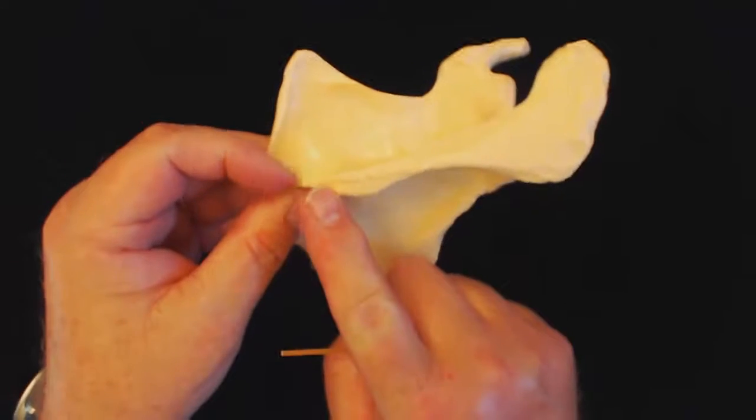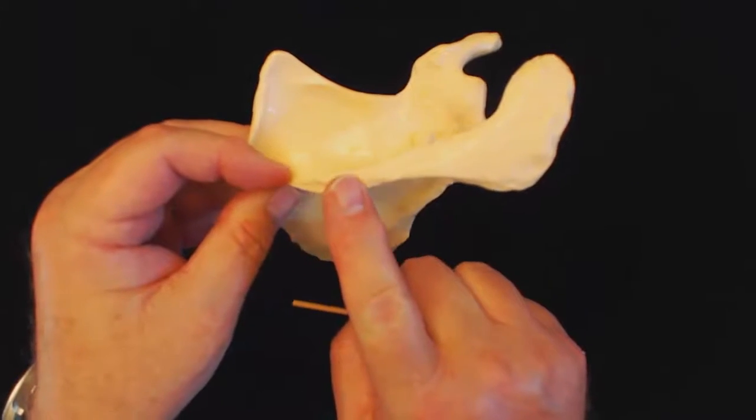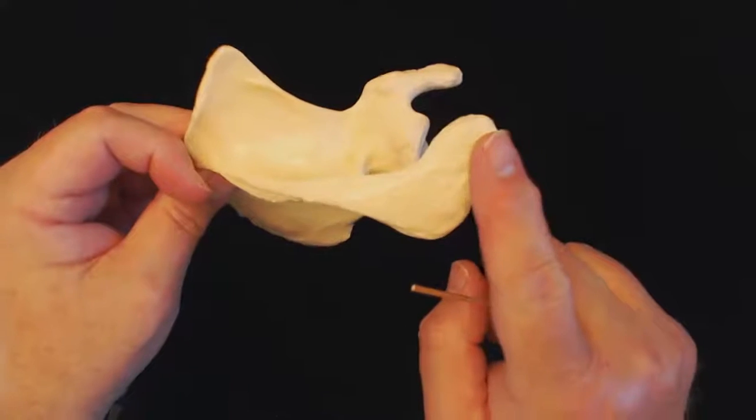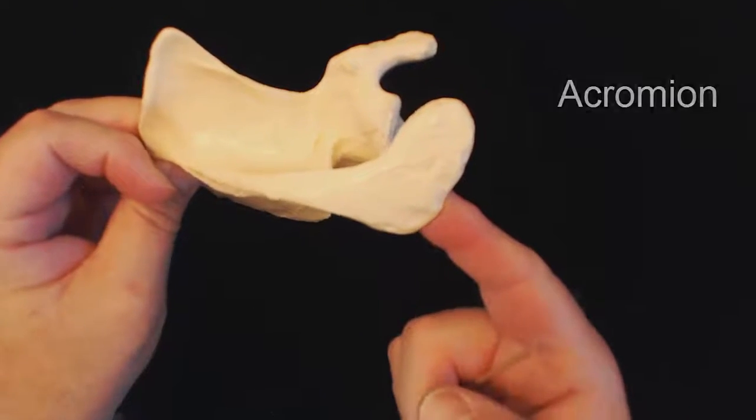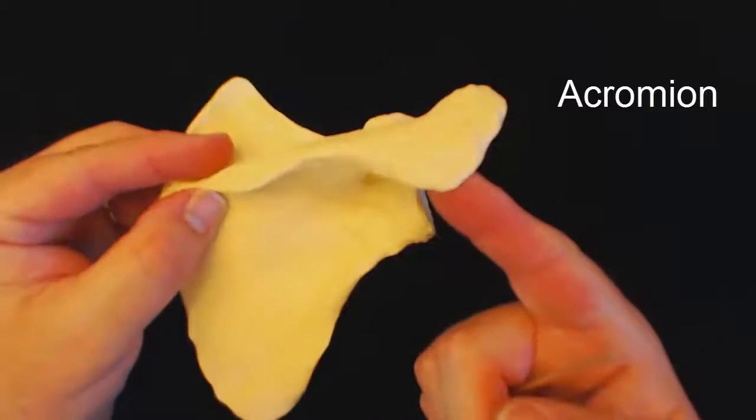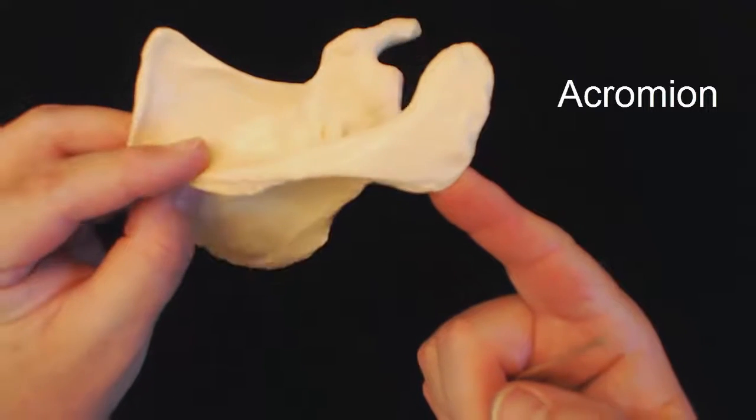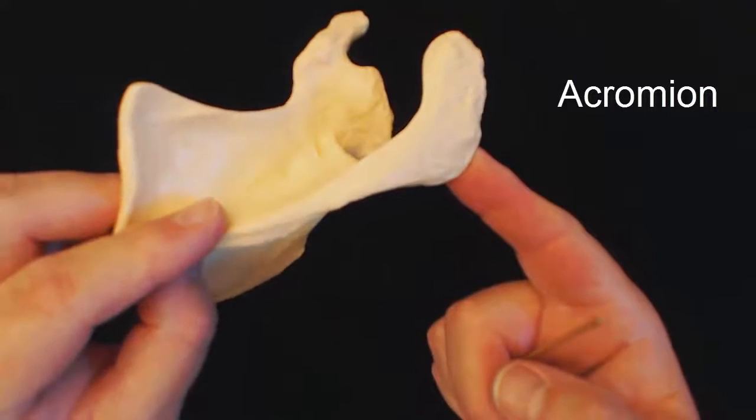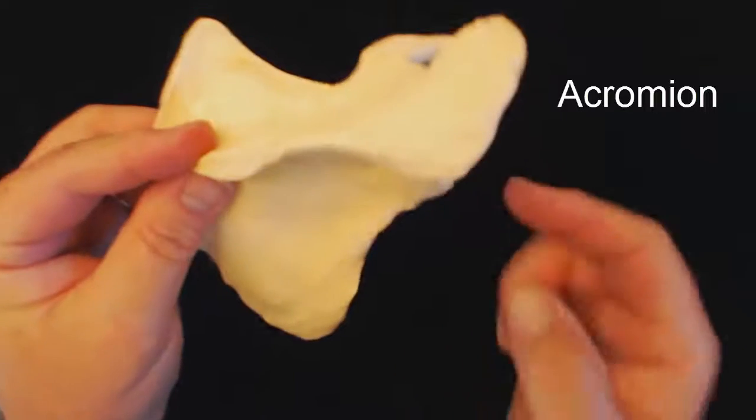Now, if we follow the scapular spine out, we're going to see this structure here. And that is going to be called the acromion. You might also hear it as acromial process.